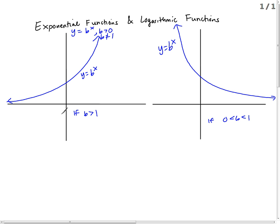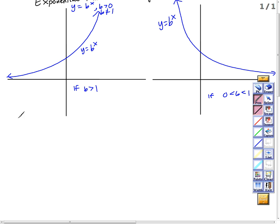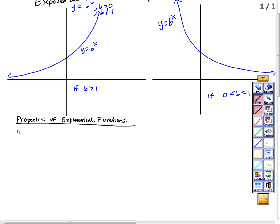These graphs have a few things in common. Exponential functions have several properties, so let's start writing them out. Properties of exponential functions. First thing, if you look at both pictures, we can look at the domain. We can get that from our graph. We can also think about an exponential function as y equal b to the x — what x values would cause an issue?